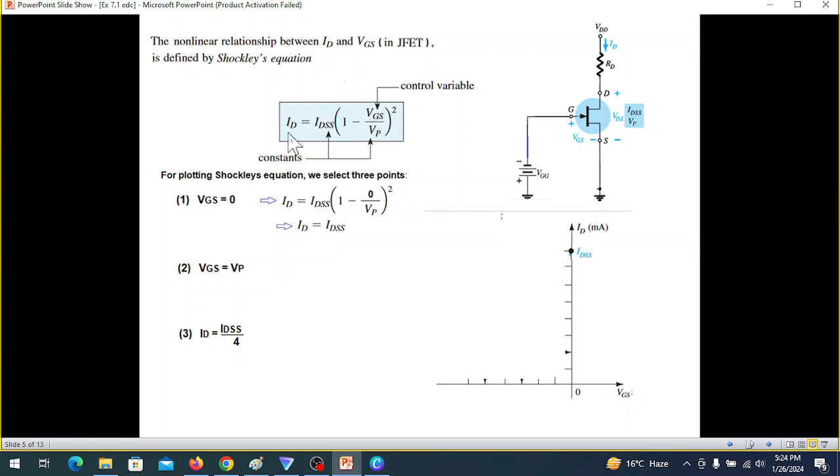Similarly, if you put VGS equal to VP, this will be 1 minus 1, zero. That means ID is equal to zero. When will ID be zero? When VGS is VP. The VP is some value here, so when VGS equals VP then the current will be zero. So we'll have a point marked on this line.